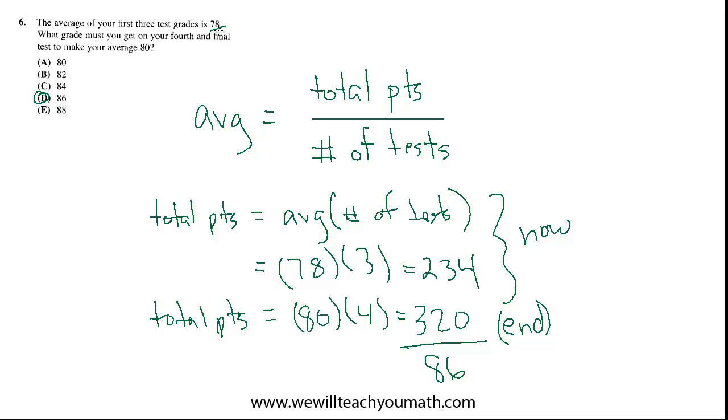You missed your target of an 80 average by two points on each of the first three tests. And that's not necessarily the case. I'm not saying you got 3 78s. You could have got something lower and then something higher, and it worked out to be an average of 78. But let's just suppose it was literally 3 78s in a row. You got exactly 78 on the first three tests. So, you missed the mark by two points each of those times.